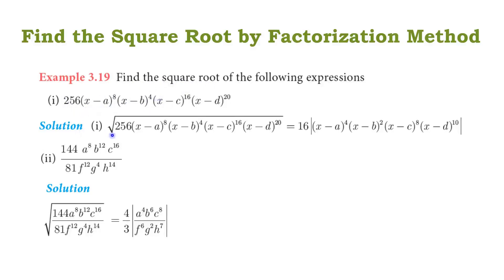Let us see the solution. For the first sum, we find the square root by the long division method, going through the steps, and for 256 we will get 16 as the square root.